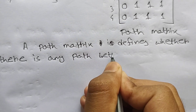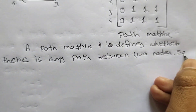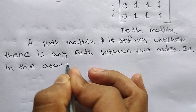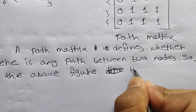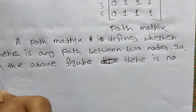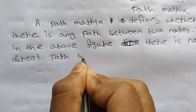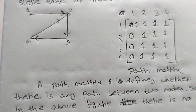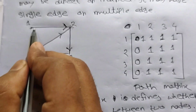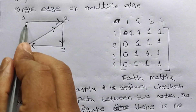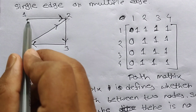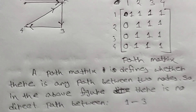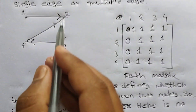A path matrix defines whether there is any path between two nodes. In the above figure, there is no direct path between 1 to 3, but we can go 1→2→3. There is also no direct path for 1 to 4, but we can go 1→2→3→4.